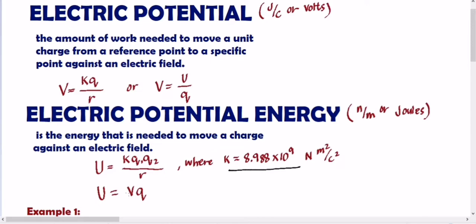So when it comes to units, electric potential has a unit of joules per coulomb, or volts. Electric potential energy naman ay joules. So yun yung pagkakaiba — volts sa electric potential, joules naman sa electric potential energy.